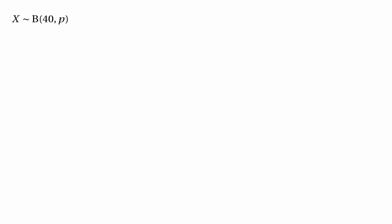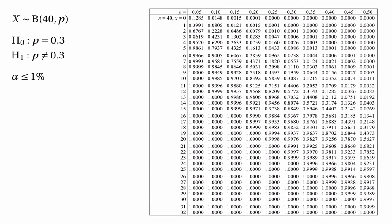Let's look at one more example, this time about the binomial distribution. The null hypothesis is that P, the probability of success, is 0.3, and the alternative hypothesis is that P isn't 0.3. We're aiming for a level of significance up to 1%. We need to split the probability between the two tails, so we halve 1% to get 0.005. Scanning down the column headed by 0.3, we get to 0.0026 and can't go further without going over 0.005, so the lower part of the critical region is the numbers 0, 1, 2, 3 and 4.